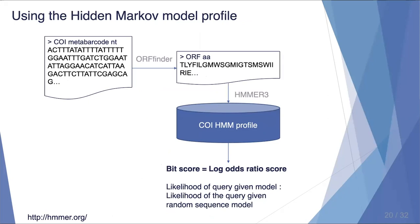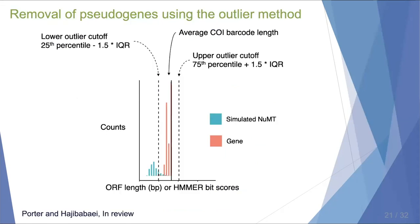The bit score is a log odds ratio score — it is the likelihood of the query given the model versus the likelihood of the query given a random sequence model. Once I have this information, I can plot a distribution to calculate cutoffs. In this figure, the teal colored bars are simulated NUMTs and the coral colored bars are genes. The x-axis shows either the distribution of ORF lengths or HMMER bit scores. Values that fall at the ends of this distribution are removed as putative pseudogenes.